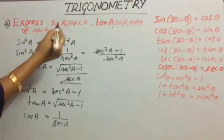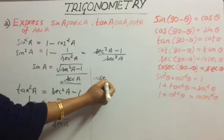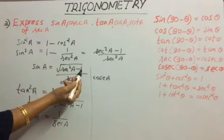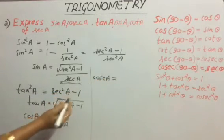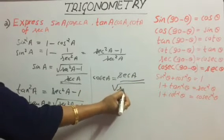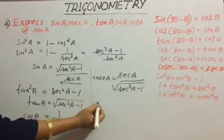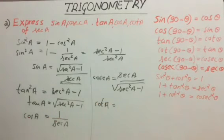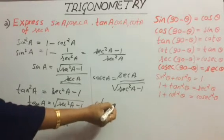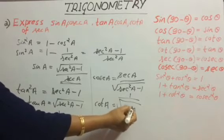Now let us consider cosec a. Since cosecant is the reciprocal of sin, and we know sin a = √(sec²a - 1) / sec a, therefore cosec a = sec a / √(sec²a - 1). Similarly, consider cot a. As cot is the reciprocal of tan, and tan a = √(sec²a - 1), so cot a = 1/√(sec²a - 1).